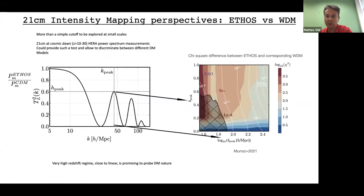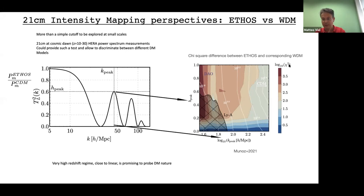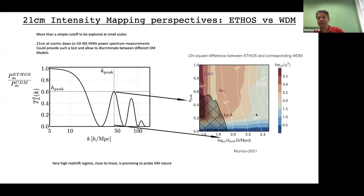There are also future observables. There is a group by Muñoz working on this: suppose we want to disentangle between an ETHOS-like model with suppression and dark acoustic oscillations, versus warm dark matter which would fit only the envelope of those oscillations. With 21-centimeter observations at high redshift, between redshift 10 and 30, you are able to disentangle the two models — provided you get rid of foregrounds. The chi-square difference between two models that are very similar in power spectrum becomes significant at those small scales, which are not addressed by the Lyman-alpha forest.